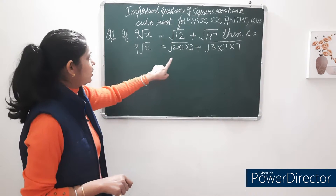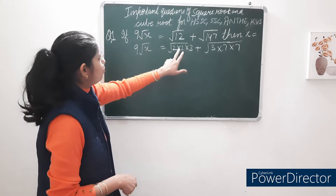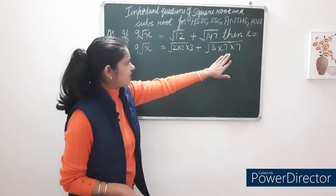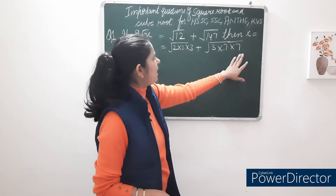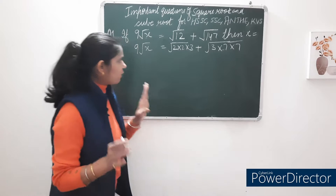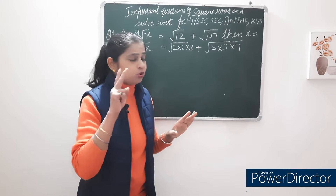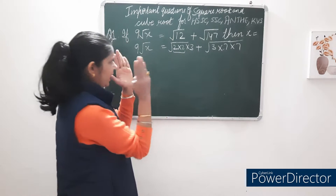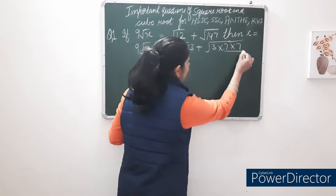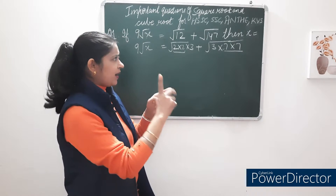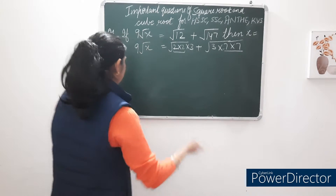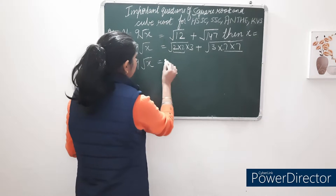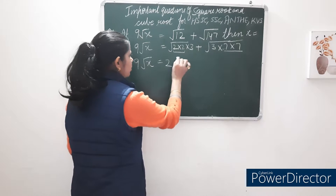9√x is equal to — now for 12, we write 2×2×3. And 147 can be written as 3×7×7. In square root, हम 2 के pairs बनाते हैं — we make pairs of 2 digits, and from each pair we take one digit outside. So from √12 we get 2√3.